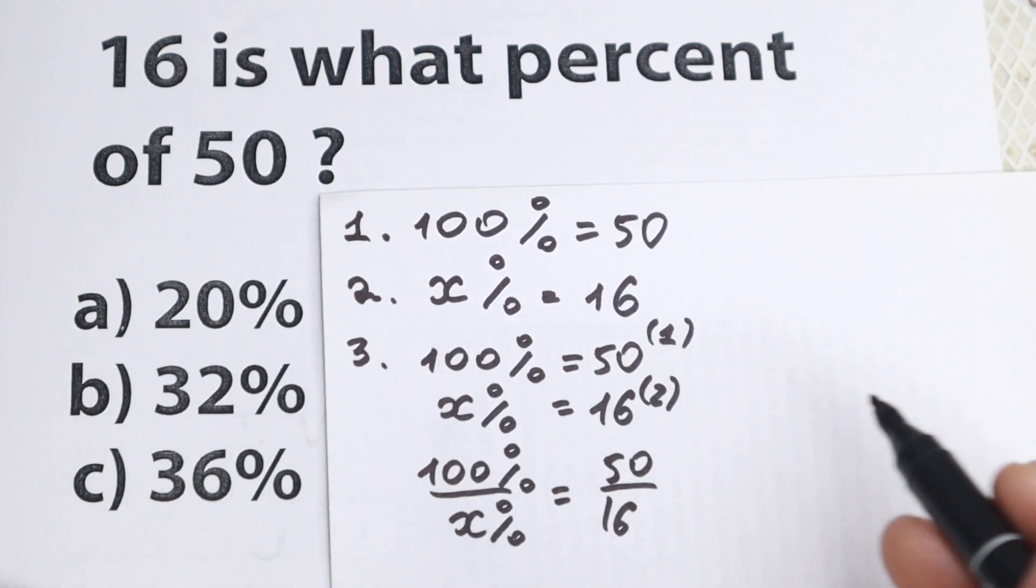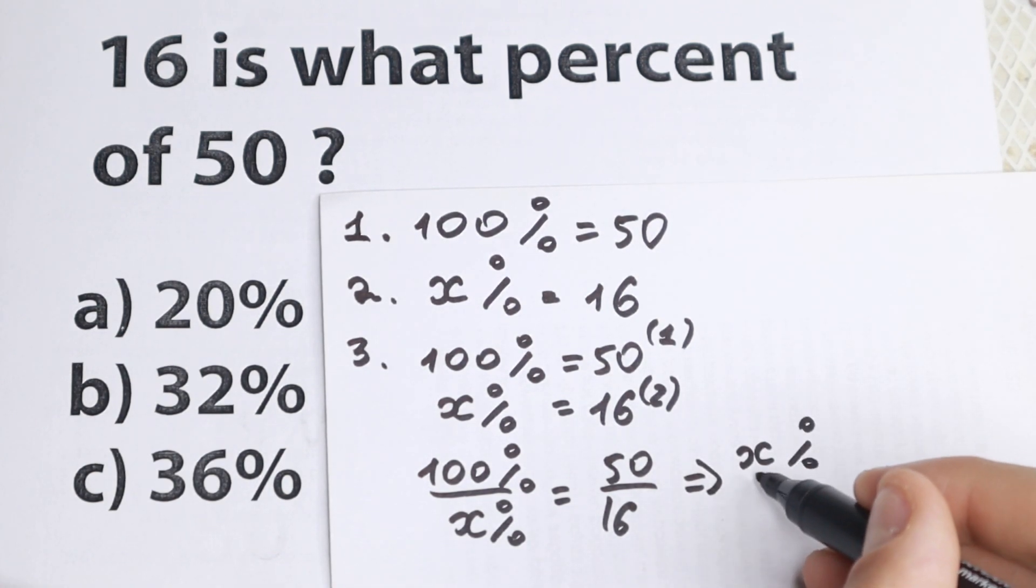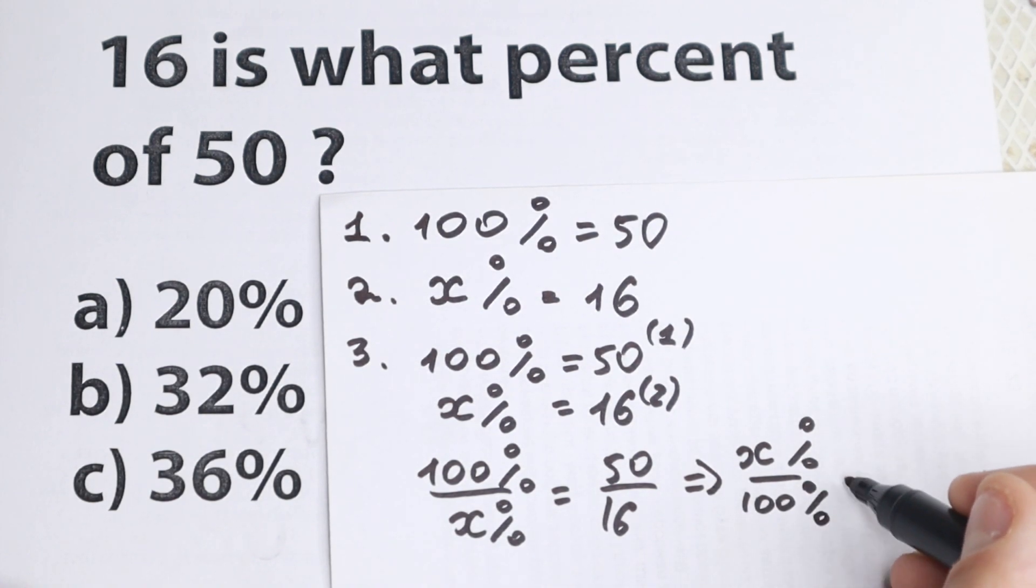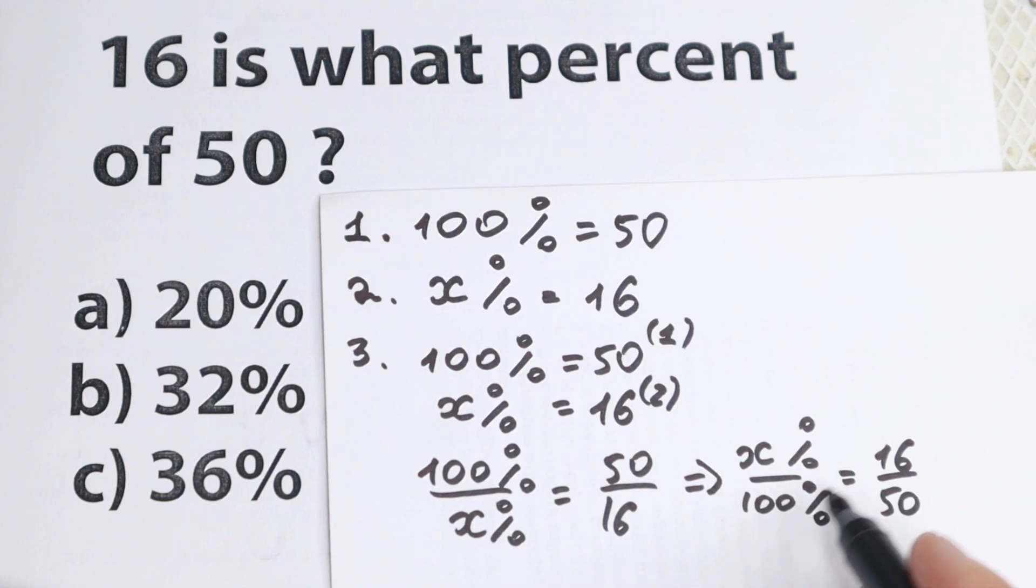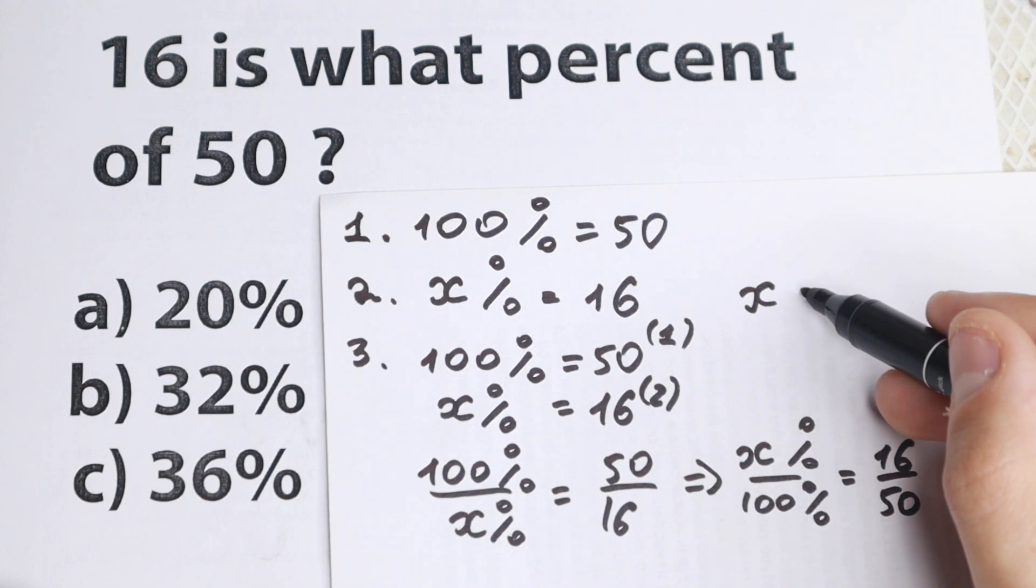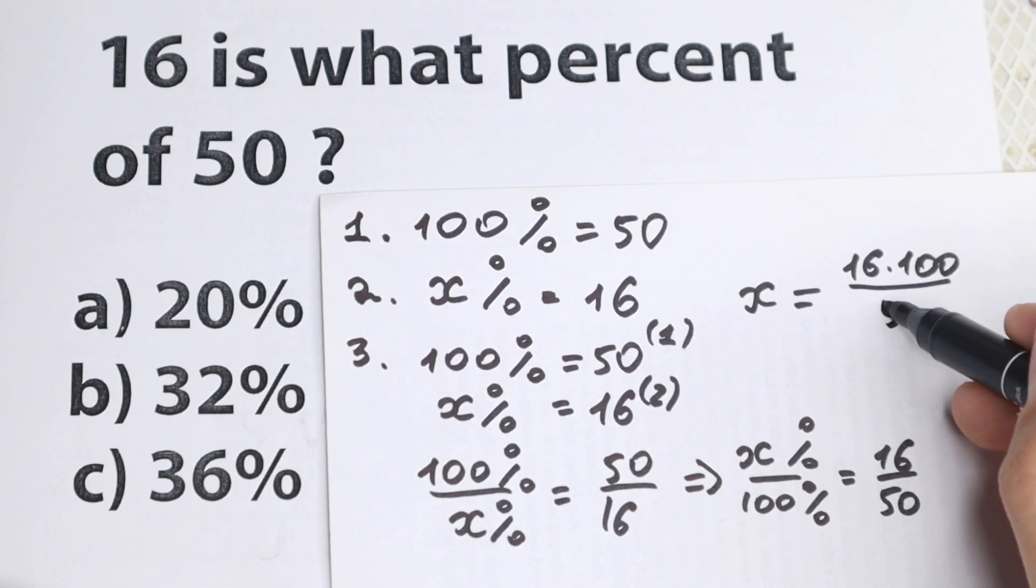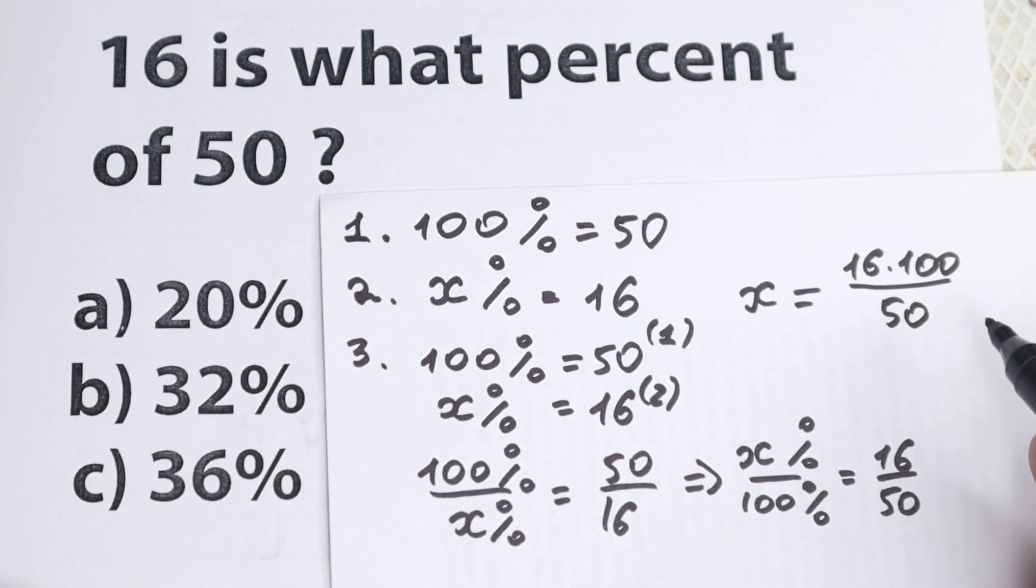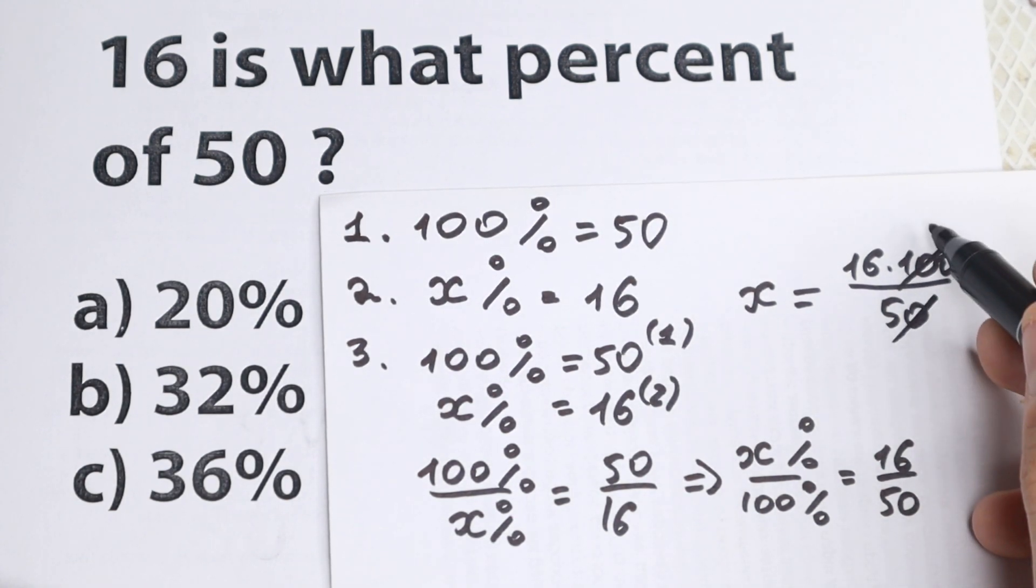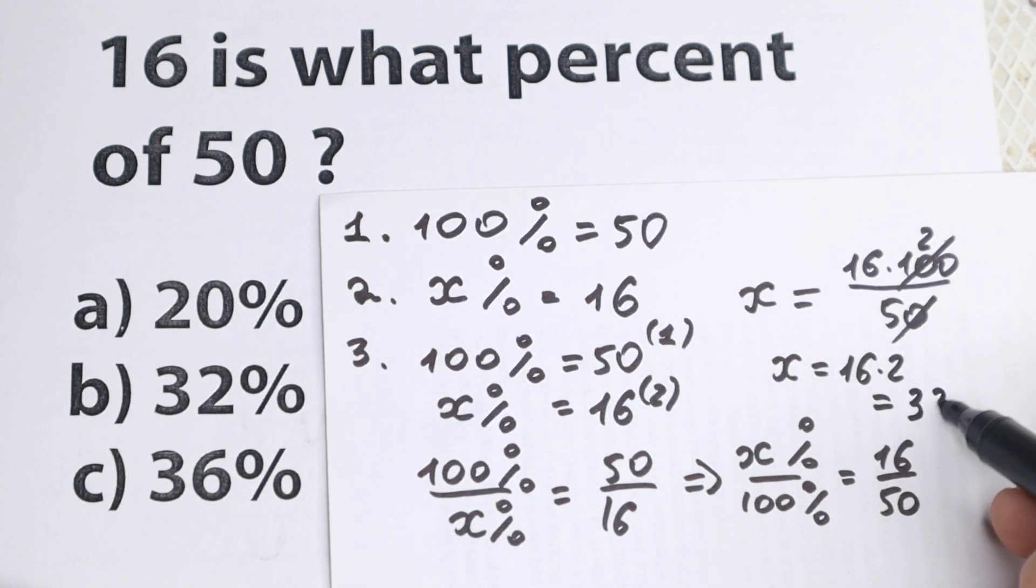And taking the inverse or reciprocal of both sides yields that our x percent over 100 percent equal to 16 over 50. But how can we solve this problem? So from here x equal to 100 times 16, so I write it right here on the top, so x percent, or I write only our x equal to 16 times 100 and dividing by 50. And take a look closely, 100 and 50, we can easily divide it by 50 and we have two, so x equal to 16 times 2 which is equal to 32 percent.